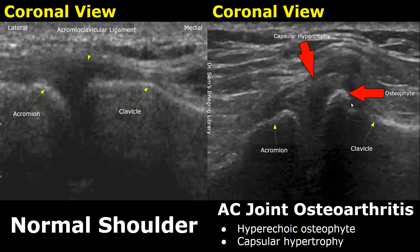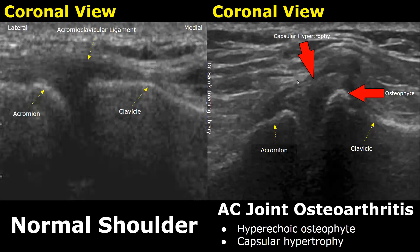In this image we have AC joint osteoarthritis. The joint space is filled with hyperechoic osteophytes, and there is also capsular hypertrophy — we see a thick joint capsule, whereas in the normal joint this type of thickness is not seen.